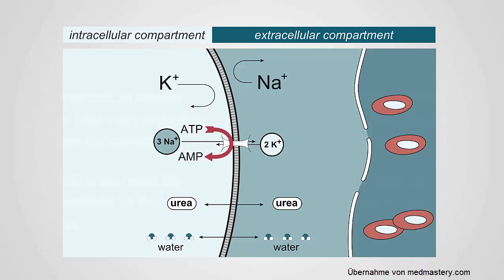The body is divided into two large compartments: an intracellular compartment and an extracellular compartment. The division between those two compartments is the cell membrane. The cell membrane is impermeable to charged particles like potassium and sodium, though they can pass through a specific sodium-potassium ATPase molecule found on all cells. Small, nonpolar molecules like urea and CO2 can easily cross the cell membrane, as can water.